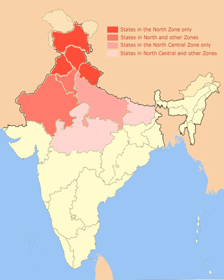North India lies mainly in the north temperate zone of the Earth. Though cool or cold winters, hot summers and moderate monsoons are the general pattern, North India is one of the most climatically diverse regions on Earth. During summer, the temperature often rises above 35 degrees Celsius across much of the Indo-Gangetic Plain, reaching as high as 50 degrees Celsius in the Thar Desert, Rajasthan, and up to 49 in Delhi. During winter, the lowest temperature on the plains dips to below 5 degrees Celsius, and below the freezing point in some states.